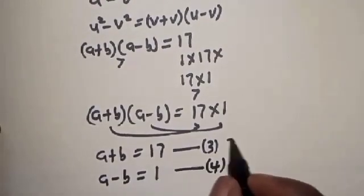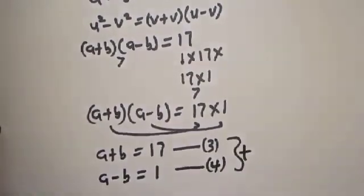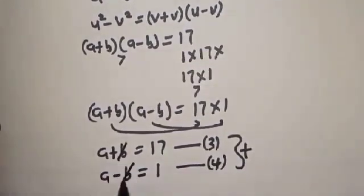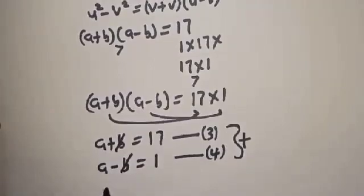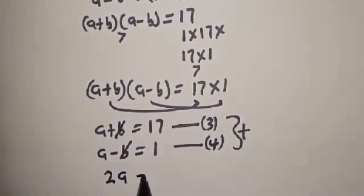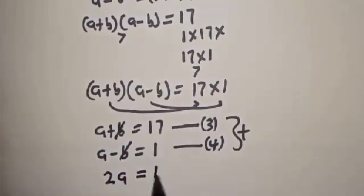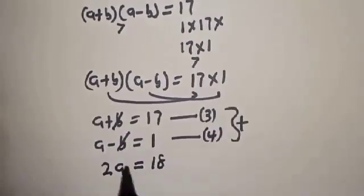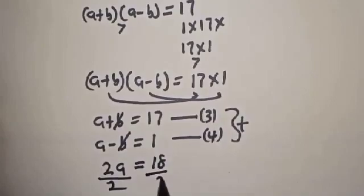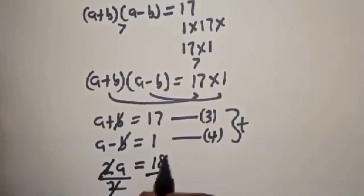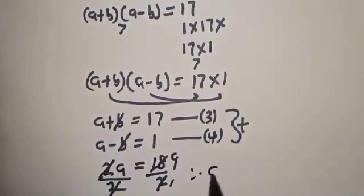Now let's add the two equations together. The b terms cancel, giving 2a equals 17 plus 1, which is 18. Dividing both sides by 2, we get a is equal to 9.